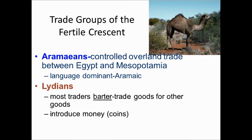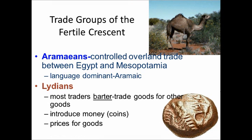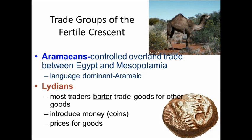The other group of people are called the Lydians. Most people at this time would trade by barter — trading goods and services for other goods and services. But the Lydians changed things because they introduced coin money. And if you're going to have money, you also have to have prices. So the Lydians established a money system for their trade, usually based on precious metals like gold or silver.